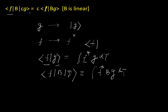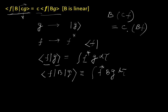Coming back to the question f|B|cg: c is in the ket position, so in terms of an integral it comes out as c (not c*). So the remaining part is f|B|g, and c comes out giving c·f|B|g. This is because B is linear — the linear operator B operating on cg gives c·Bg since c is a constant. Since c is in ket position, c comes out as c, not c*. So the statement is TRUE.